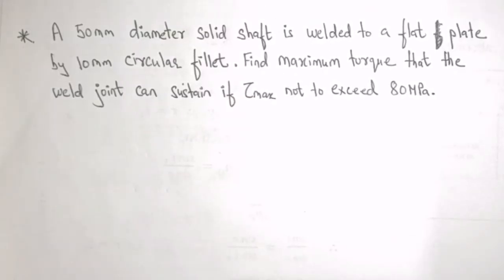Let us solve one more question on this type. The question is, a 50 mm diameter solid shaft is welded to a flat plate by 10 mm circular fillet. Find maximum torque that the weld joint can sustain if Tau max not to exceed 80 MPa.